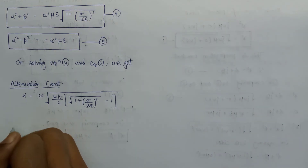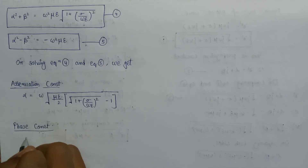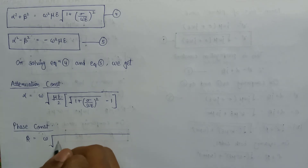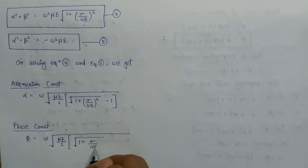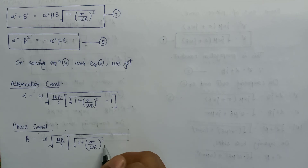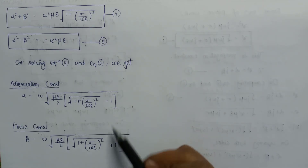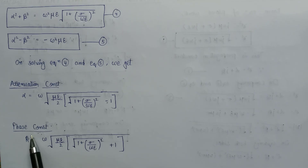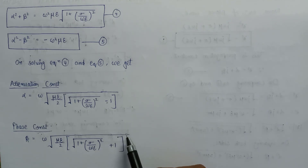Similarly, we also get the phase constant beta, which equals omega times the square root of mu epsilon over two, inside the bracket, times the square root of 1 plus sigma over omega epsilon squared, plus one. The basic difference between the two is the sign: in attenuation constant alpha there is a negative sign, whereas in phase constant beta there is a positive sign. Everything else is similar.